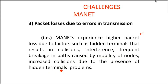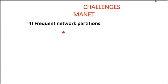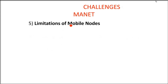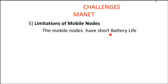Packet losses due to transmission errors are common — this is an ad hoc network where nodes are coming and going, and hidden nodes can cause multiple errors. Regarding network partition: because movement is so frequent, it often leads to partition of the network due to multiple intermediate nodes moving away. Additionally, mobile nodes have short battery life, which is a limitation because communication needs to be continuous but may not always be possible.